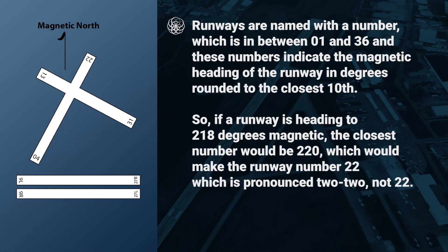Runways are named numerically with a number between 01 and 36. These numbers indicate the magnetic heading of the runway in degrees rounded to the closest 10th. So if a runway heading is 218 degrees magnetic, the closest number would be 220, which would make the runway number 22, pronounced 'two-two,' not 'twenty-two.'